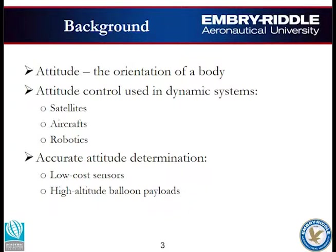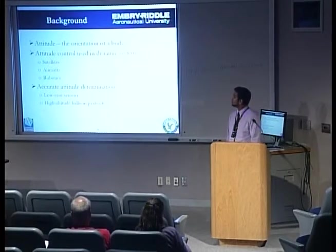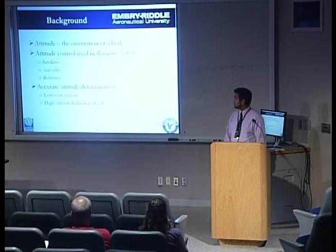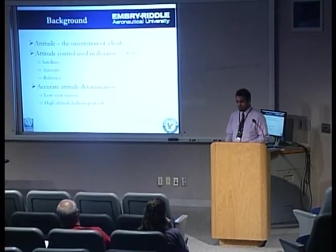So what is attitude determination, or what is attitude in general? Attitude is nothing but the orientation of a body. There is high interest in attitude control nowadays in many dynamic systems requiring pointing accuracy, including satellites, aircraft, and robotics. For one to successfully control the attitude of a body, they must first determine it accurately. This paper proposes an accurate attitude determination system using low-cost sensors for high-altitude balloon payloads.